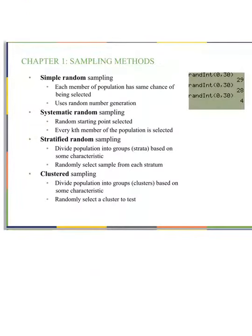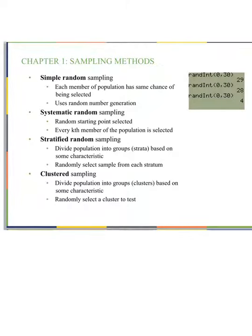Here are the sampling methods from chapter one. Simple random sampling means that everyone in the population has the same chance of being selected. Systematic random sampling is where you might pick every fifth person that comes through the door. Stratified random sampling is where you divide the population into groups called strata based on a characteristic, and then randomly sample each stratum. Cluster sampling is where you divide the population into clusters and then randomly select a cluster. The main idea is we would normally just use technology, and that would give us a better sample of the population.